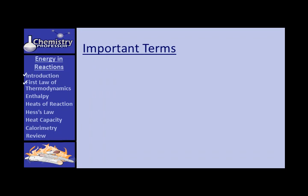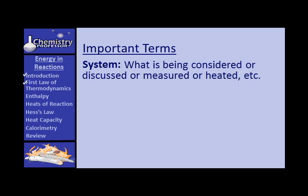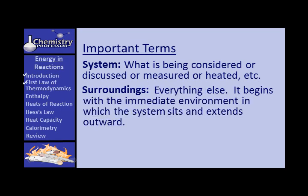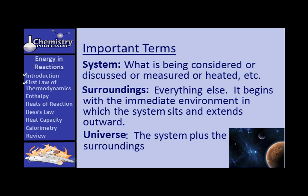There are some more important terms to discuss. First is the concept of system — a system is what we are talking about, what we're measuring; it may be the contents of a beaker that are reacting. The surroundings is everything else: the beaker itself, other parts of the immediate environment, and it extends ever outward. The universe is the system plus the surroundings.